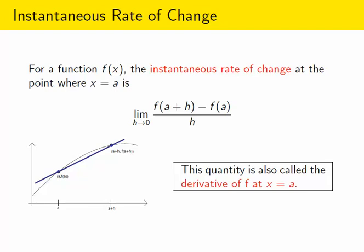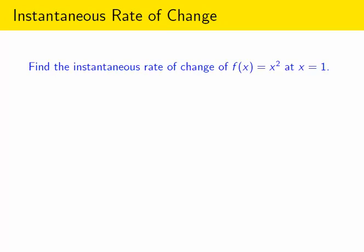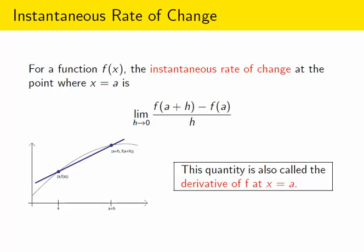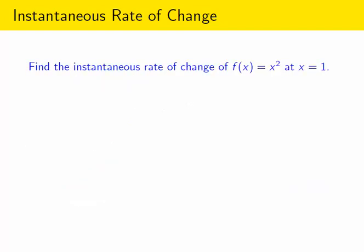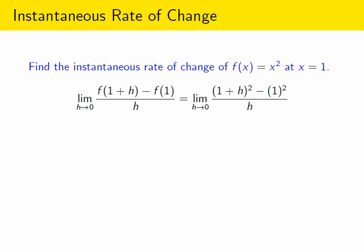So let's see a quick calculation for how this would actually work. Let's find the instantaneous rate of change of the function x squared at the point where x is equal to 1. So we're going to use that formula from the previous screen, f of a plus h minus f of a over h. But our a value here is 1, so we're going to plug that in. And this is what we have to calculate: the limit as h gets closer to 0 of f of 1 plus h minus f of 1 over h.